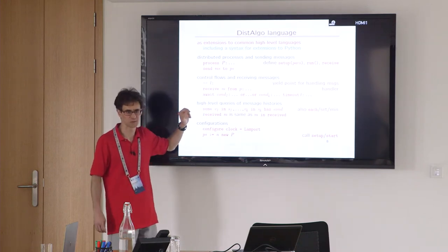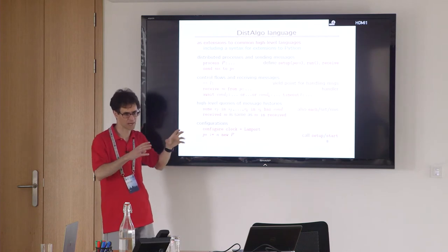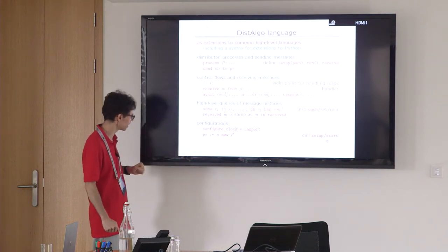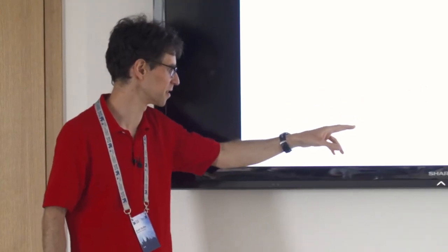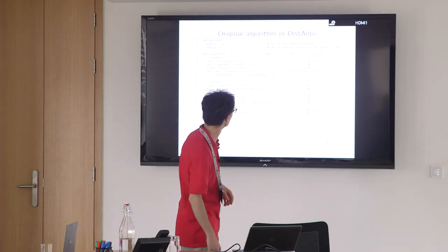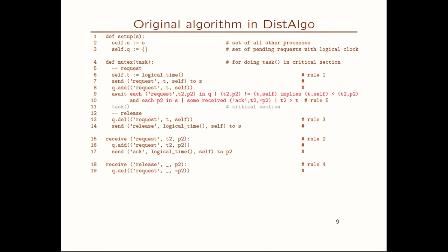We can use pattern matching as well — similar to OCaml. You can have a pattern there and pieces of the message get matched and bound to corresponding pieces of the pattern. The await statement is our main synchronization statement: you await some condition and execute the corresponding statement. There can be multiple branches and you can also have a timeout. The condition often involves these high-level queries with quantifiers — we write 'some' for existential and 'each' for universal quantifier. As syntactic sugar, you can write 'received m' as shorthand for 'm in received'.